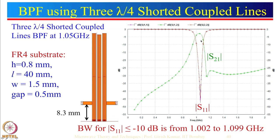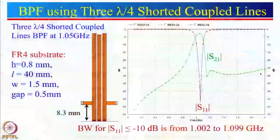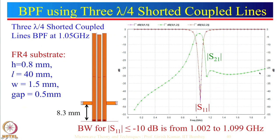All these sections will start resonating again at around triple the designed frequency, which may not be desired for several applications. In that case, you may need to put a band reject filter at that third harmonic frequency, or integrate a low pass filter which will attenuate higher frequencies.